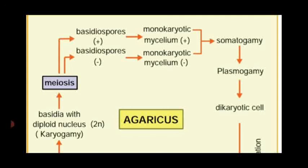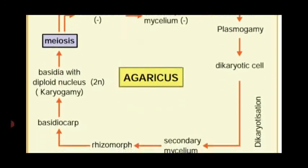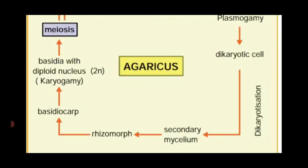The two nuclei of the different strains of mycelium fuse together to form a dikaryotic cell. This process is named dikaryotization — the cell contains two nuclei with 2N number, which is why it is named dikaryotization. From this diploid nucleus it produces secondary mycelium or dikaryotic mycelium.